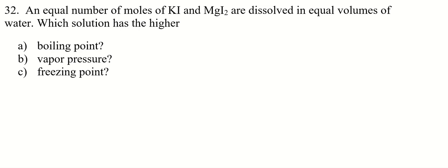We have an equal number of moles of potassium iodide, magnesium iodide. They're both dissolved in equal volumes of water. Which solution has the higher - these are colligative properties.